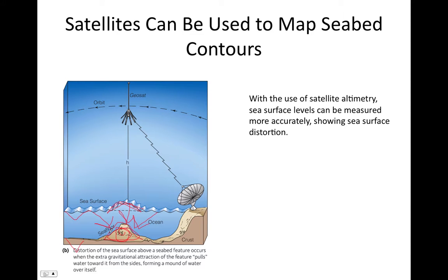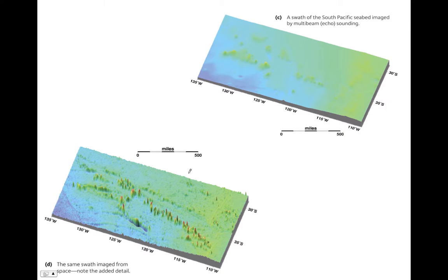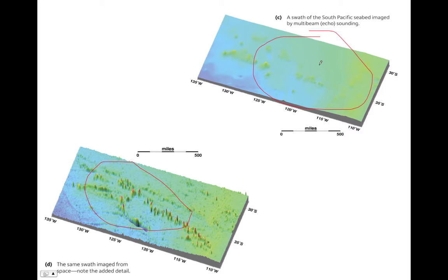Satellite altimetry is much more efficient than using multi-beam systems because you don't physically have to go out on a ship to measure the seafloor — a satellite can see a lot more of Earth than a ship can. Looking at two swaths of seafloor, one mapped by satellite altimetry on the bottom and a multi-beam system on top, you can see that we have much more precision and higher resolution with the satellite altimetry than with the multi-beam system.